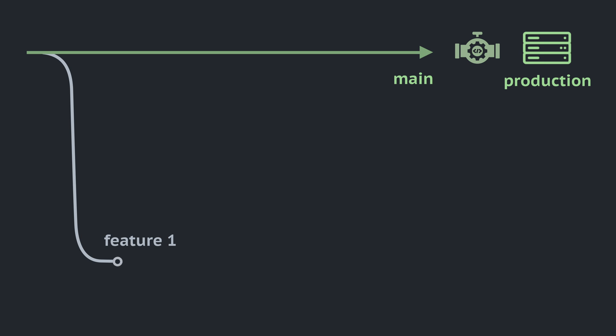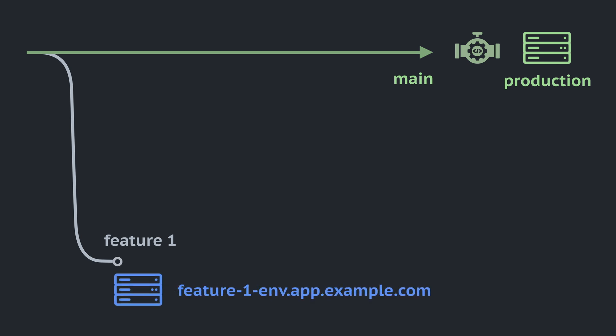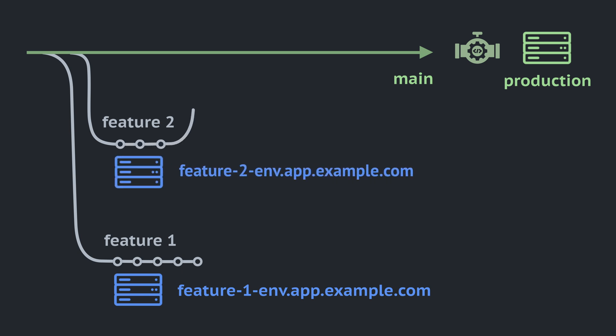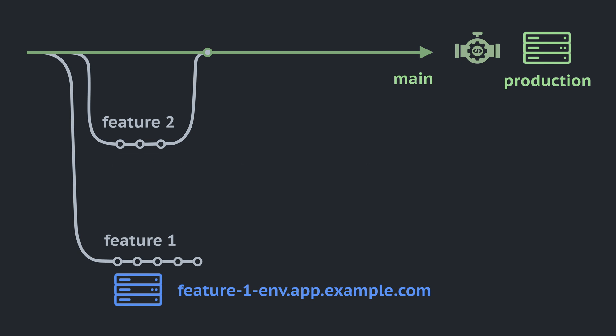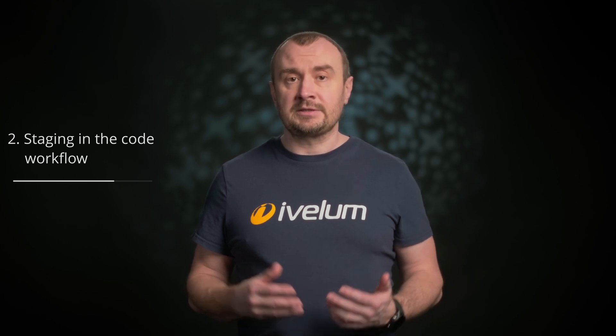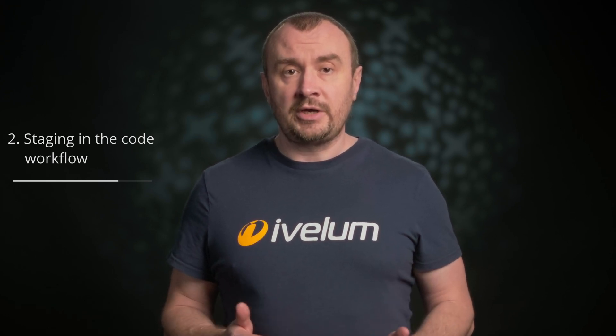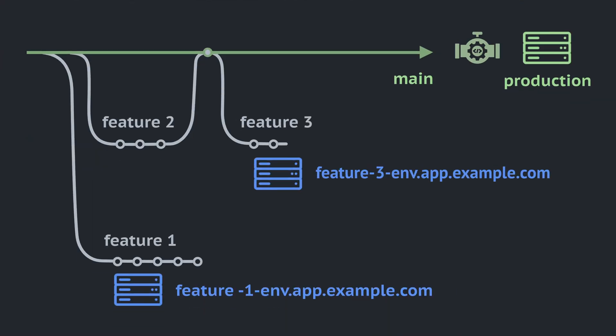To solve this problem, people invented dedicated feature environments that are automatically created for each feature branch. When a developer opens a pull request, an automation script configures a new dedicated test environment with a separate URL for testing. All subsequent updates to this pull request will be automatically deployed to its dedicated environment. After the pull request is closed, a script shuts down the environment and frees resources. This option is more complex than a single staging environment and requires more resources because multiple test environments are now running simultaneously. However, the code workflow becomes simpler — we no longer need a dedicated staging branch — and we now test each feature individually.